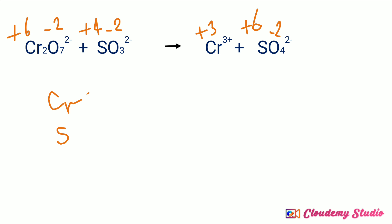In the case of chromium, the oxidation number has changed from plus 6 to plus 3. There is a decrease in oxidation number — it decreased by 3. This decrease indicates reduction.